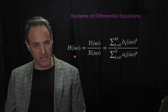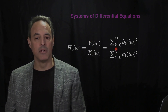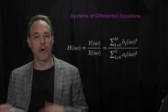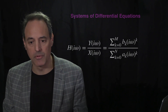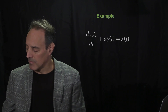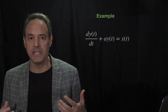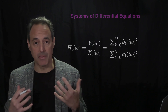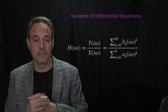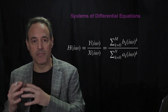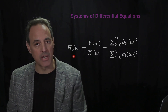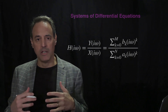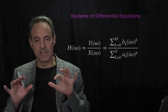So the Fourier transform of the impulse response H — which is Y over X — equals the sum to m of b_k (iω)^k divided by the sum to n of a_k (iω)^k. Here n and m are the orders of the respective differential equations. Once you have this relationship, you understand your input-to-output mapping in terms of differential equations, and this formula tells you the impulse response in the Fourier domain. You then just inverse Fourier transform to get H(t).